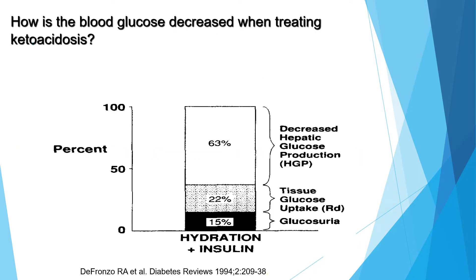When we look at the mechanism by which blood glucose decreases when treating DKA, the first and top mechanism is decreased hepatic glucose production, which is responsible for 63% of glucose decrement. The next is tissue glucose uptake, responsible for 22%, and glucosuria is responsible for 15%. This is achieved by hydration and insulin administration.